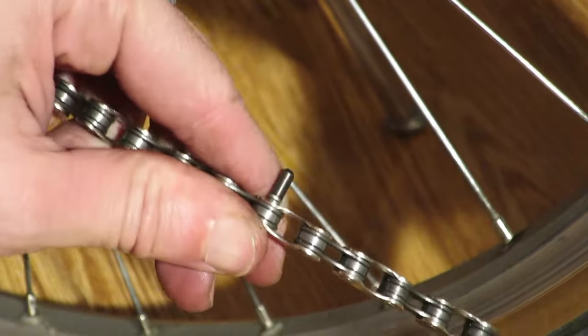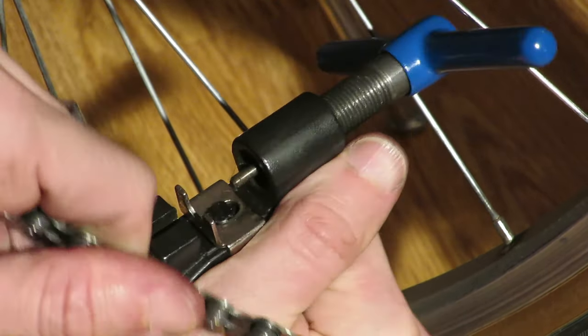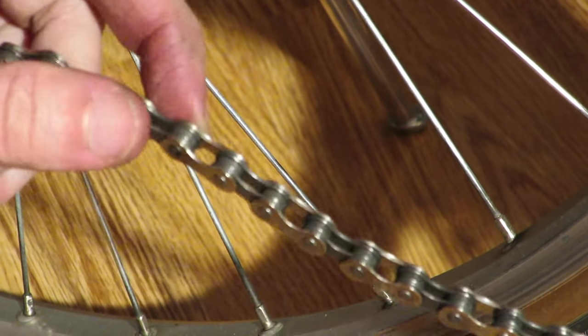You don't need another tool than the chain tool you've already used. Put the opposite end of the chain tool on the part of the pin extending outwards and snap it off.